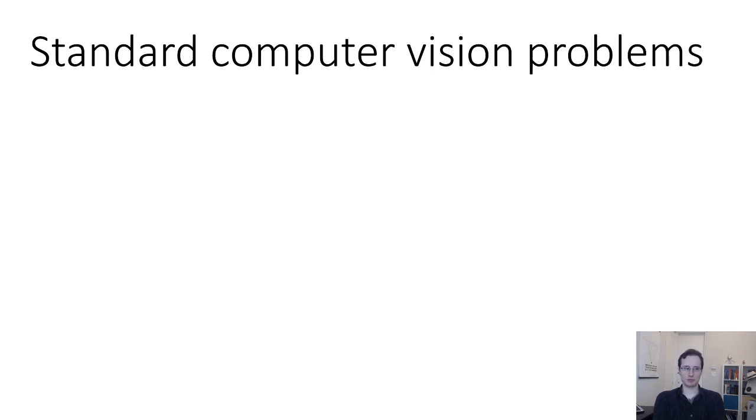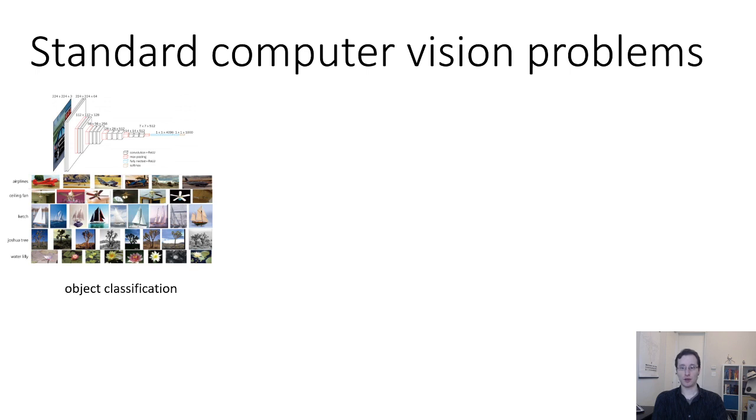So the standard computer vision problems that we'll discuss in today's lecture are going to be the following. We have object classification, which we've talked about already, so I won't dwell on this, but a lot of the methodology that we'll see for the other problems is based off of the ideas we introduced for object classification. But stated formally, the problem of object classification refers to outputting a categorical variable, meaning a discrete variable, indicating what type of object is present in the image.